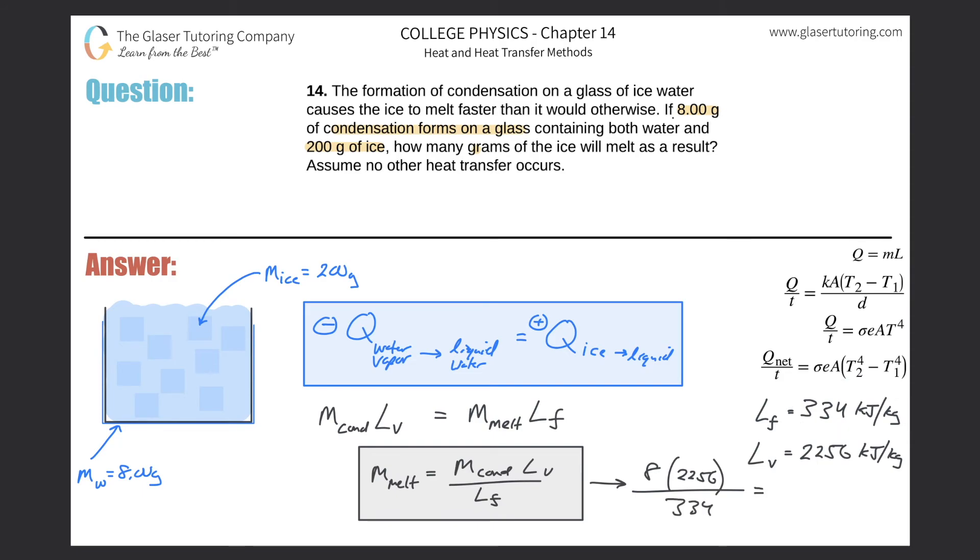And now all I need to do is just do a simple calculation. So this is eight multiplied by 2256 divided by 334. And this is about 54, 54 grams.